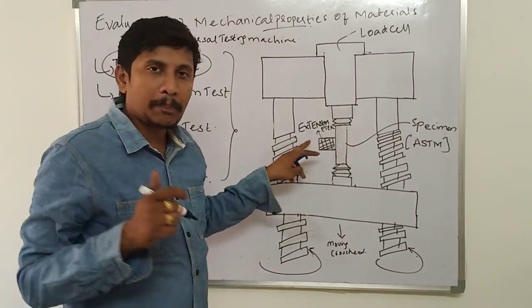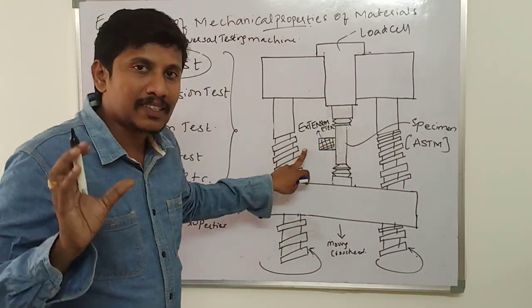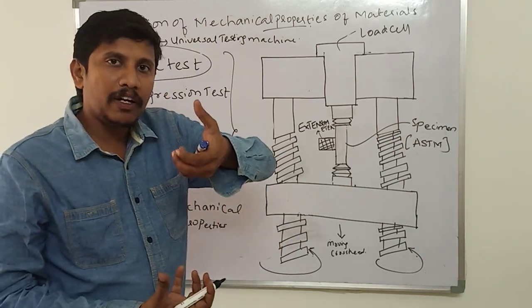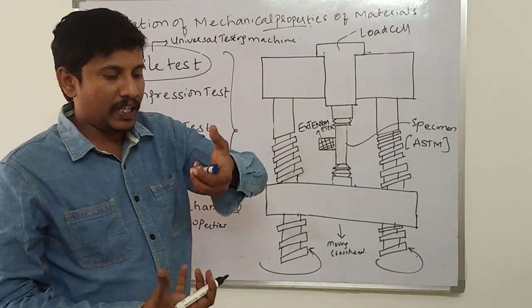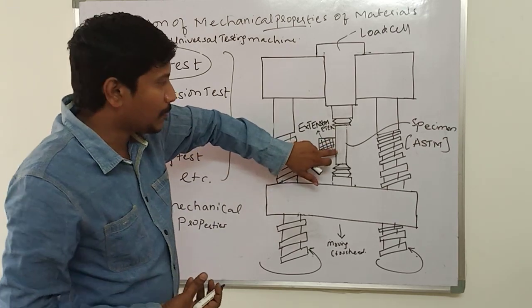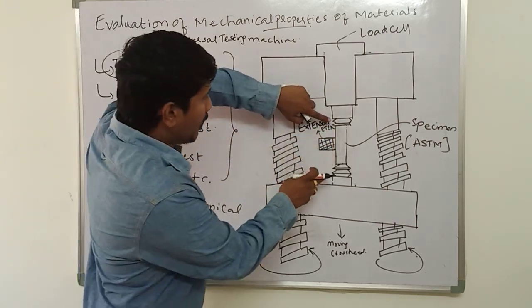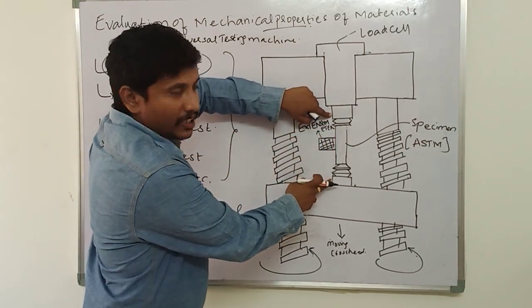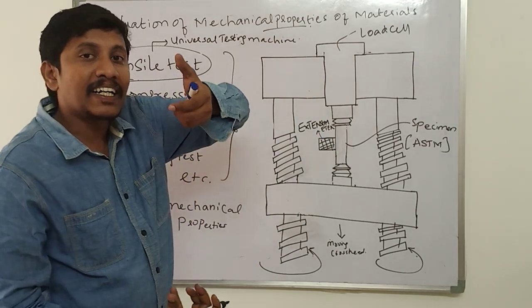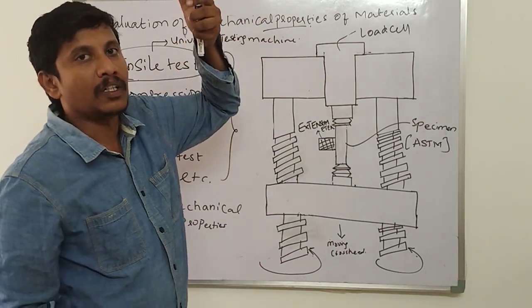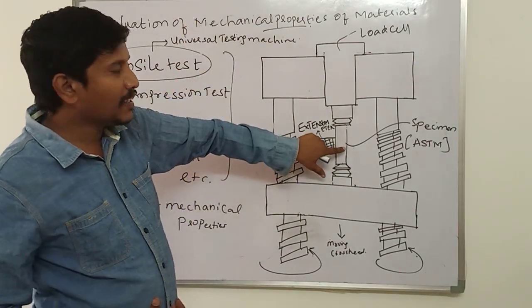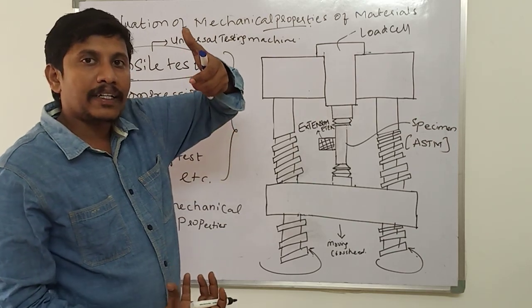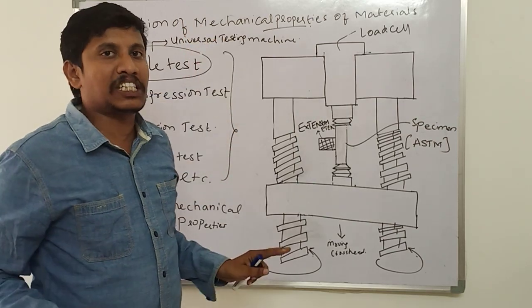The basic purpose of the tensile test is to apply a gradually increasing load. The specimen is kept between two heads of the testing machine and a gradually increasing load is applied, causing the specimen to elongate until it gets fractured.